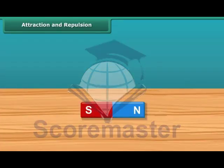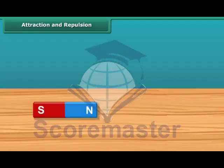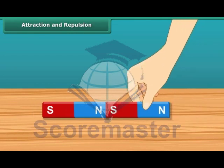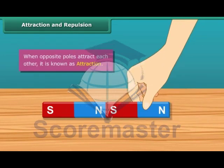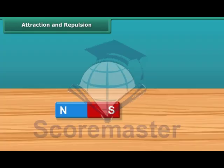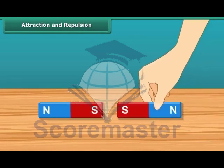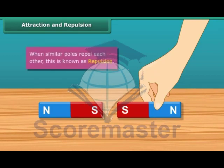Attraction and repulsion: now that you know about the poles of a magnet, let us look at the attraction and repulsion properties. When the south pole comes in contact with the north pole, they get attracted to each other — this is known as opposite poles attracting each other. Similarly, when the south pole comes in contact with another south pole, they repel each other — this is known as similar poles repelling each other.